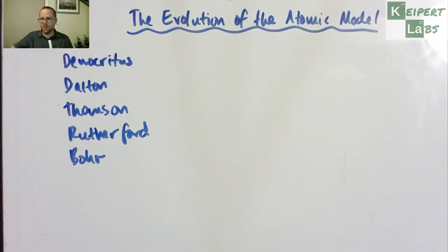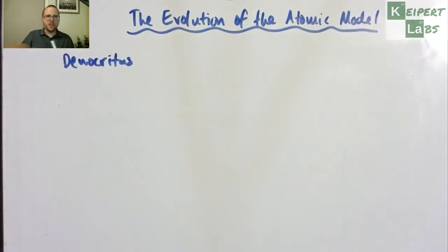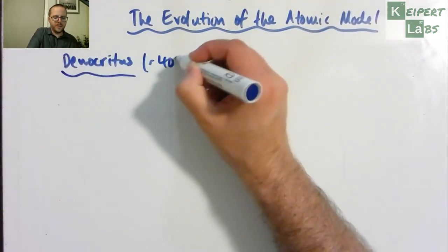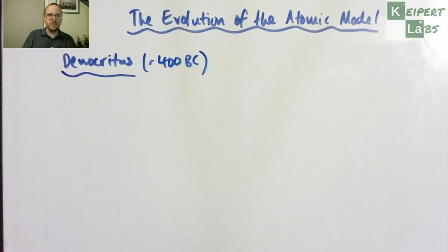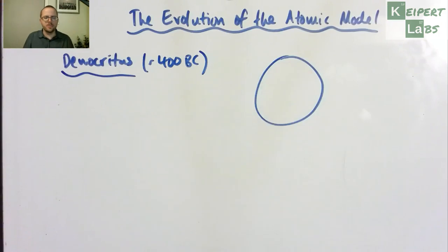So let's start with Democritus, our first port of call. We're thinking Democritus around about 400 BC. So his idea, I'm just going to be really simple, it's just a fairly plain sort of circle.